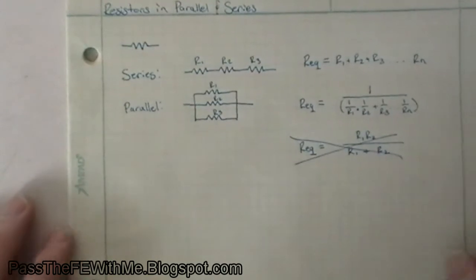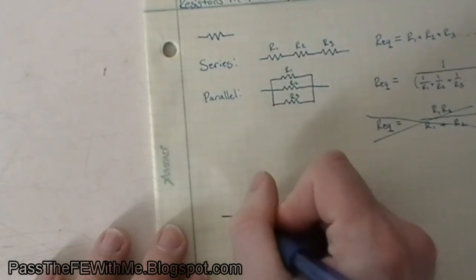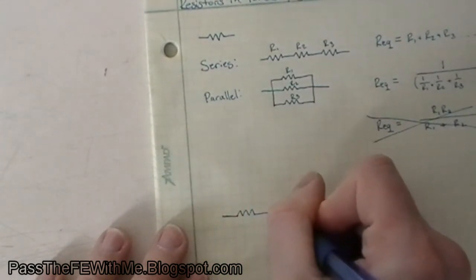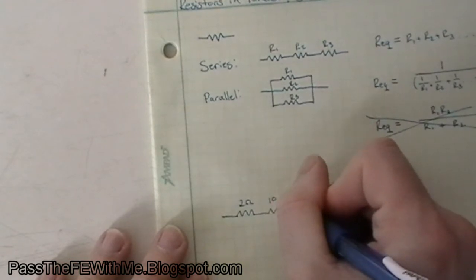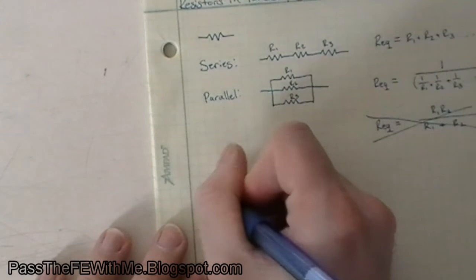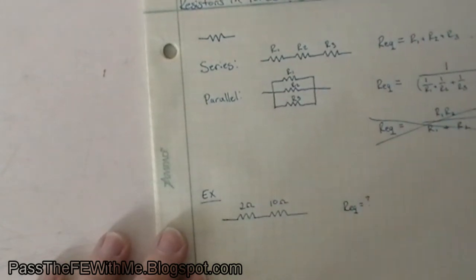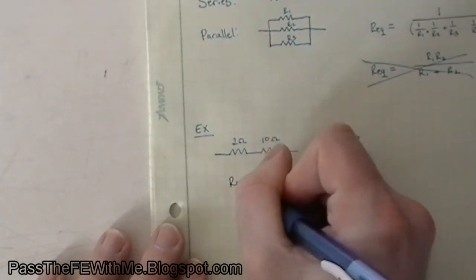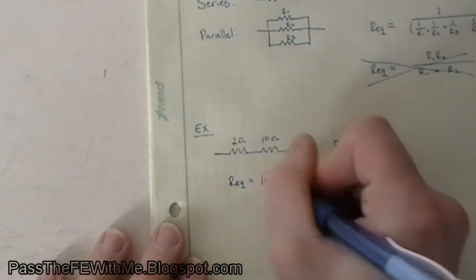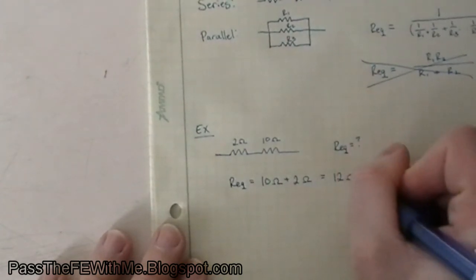Let's do some example problems. Say you have a couple resistors in series. We'll do a really simple warm up. And this one is 2 ohms, this one is 10 ohms. Resistance is expressed in ohms. What is REQ? Well, since these are in series, this is really simple. The equivalent resistance equals 10 ohms plus 2 ohms equals 12 ohms. You're done. So that was just a warm up though. They get a little tougher.